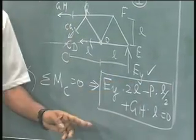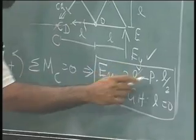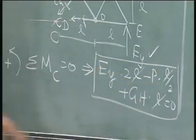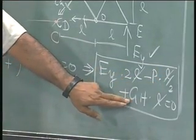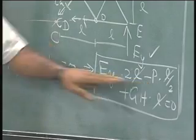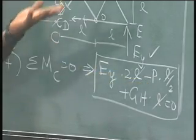I know L. In this particular case, I need not know L also. I can find out GH to be nothing but P minus 2EY. Simple.